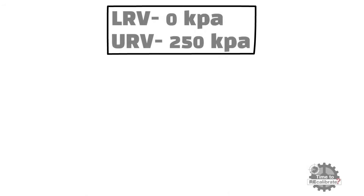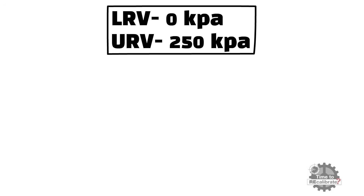Now you should have a lower range value and upper range value in order to perform a 5-point verification test. You can also get this value by connecting a HART instrument in series with the pressure transmitter. In this example, the lower range value is 0 kPa and the upper range value is 250 kPa.